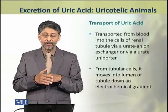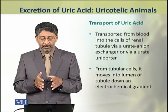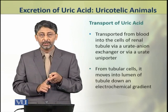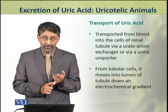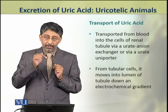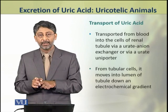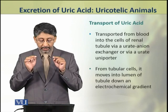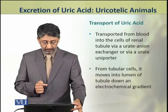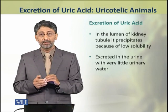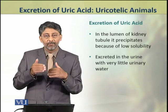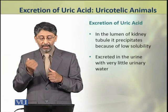The uric acid once formed is transported from the blood into the cells of the renal tubule through a urate anion exchanger or through a urate uniporter. From the tubular cells it moves into the lumen of the tubule down an electrochemical gradient. In the lumen of the kidney tubule, it precipitates because of its low solubility in water.